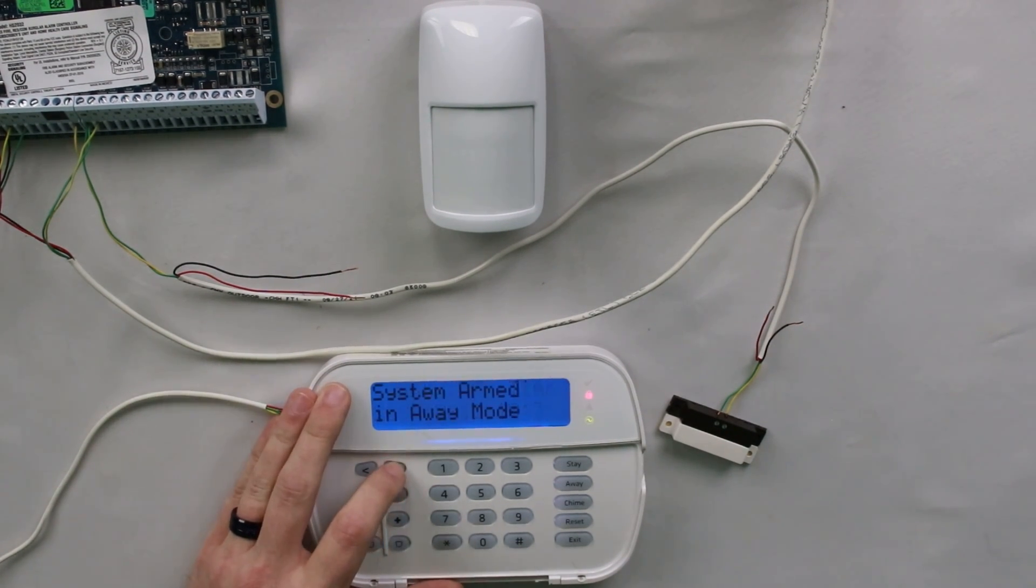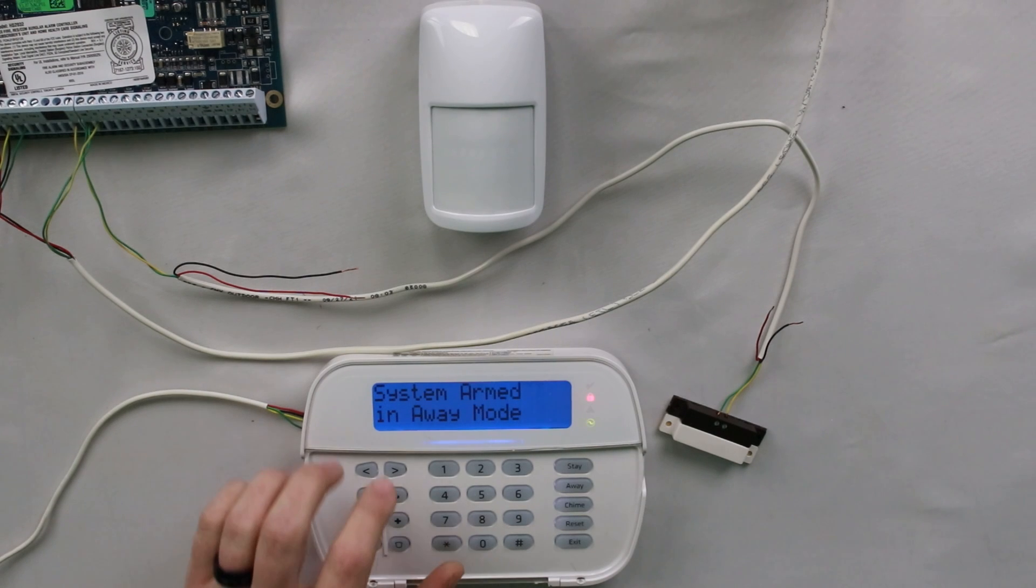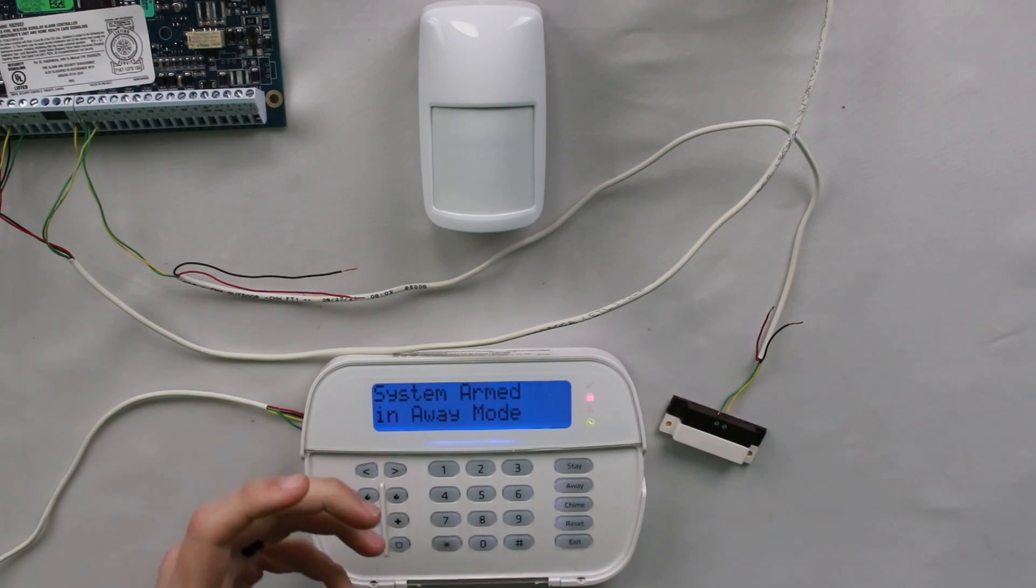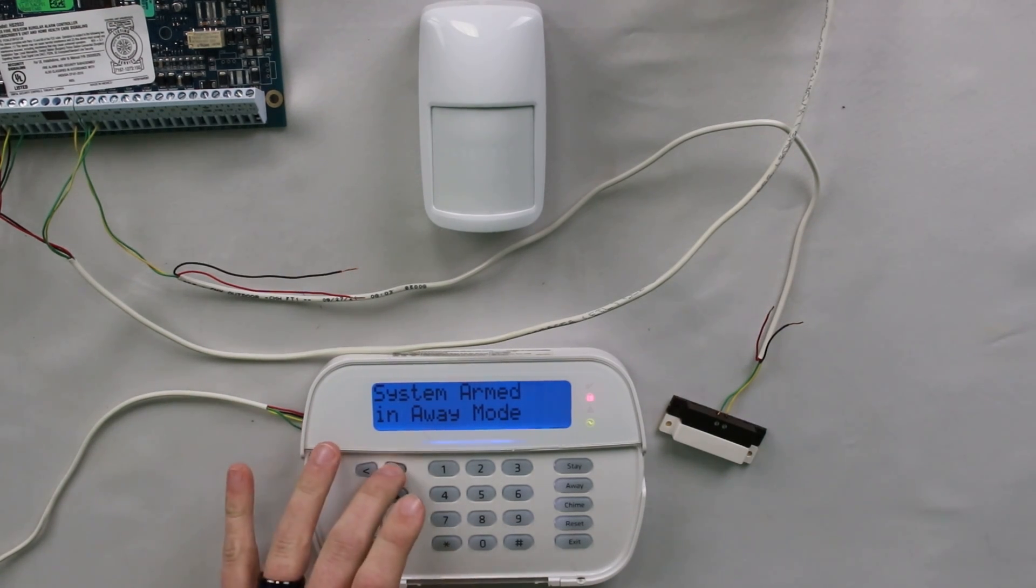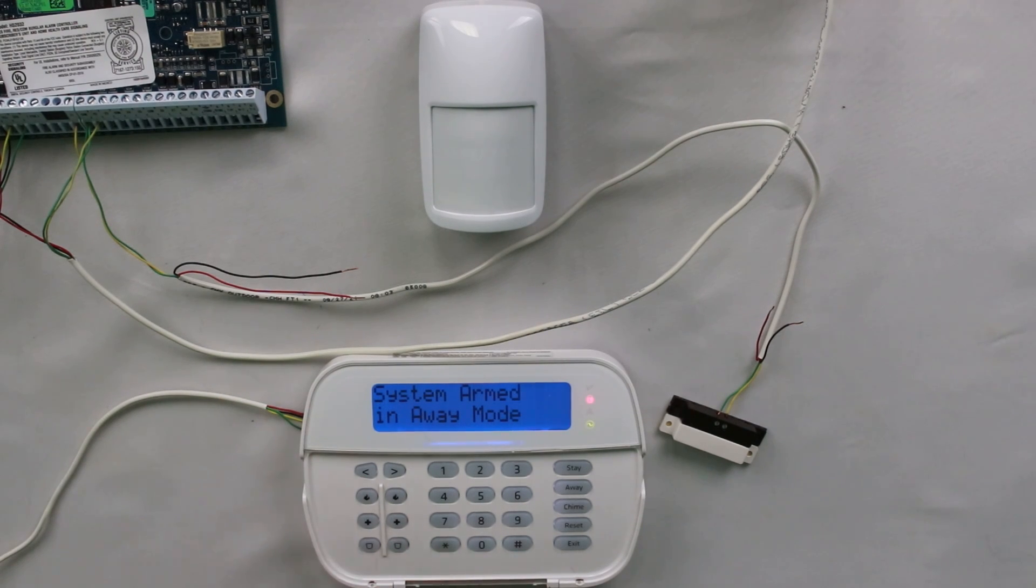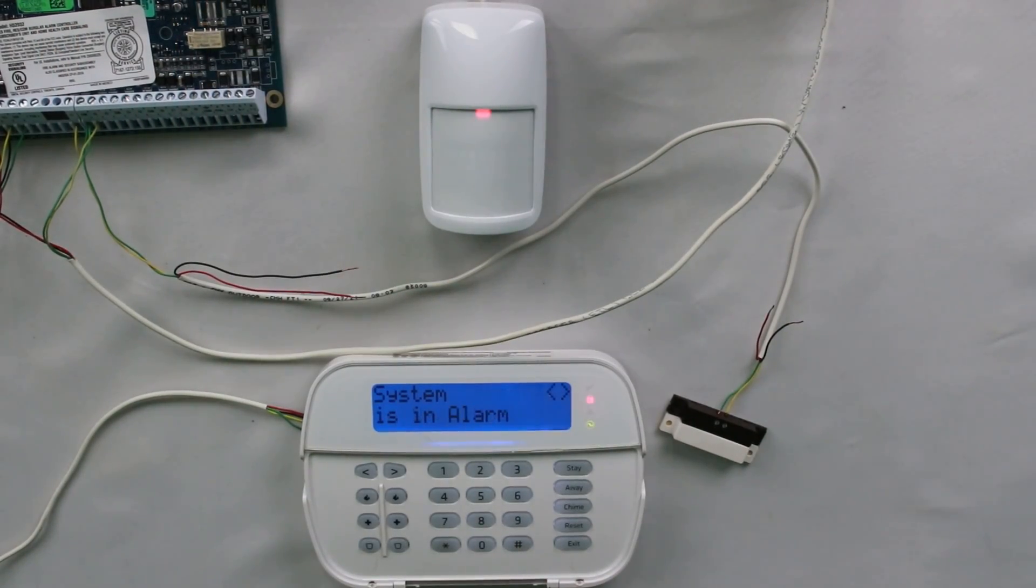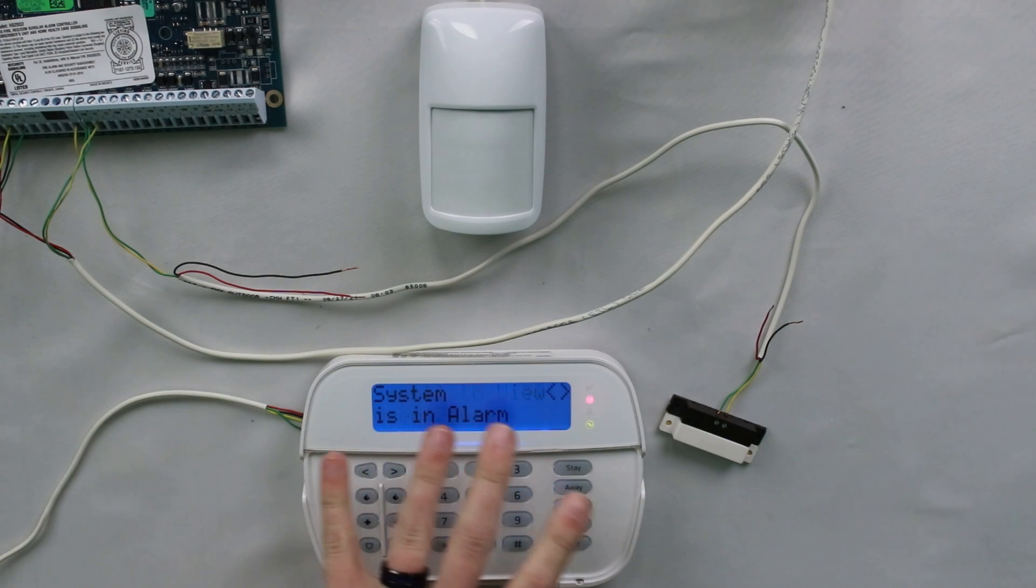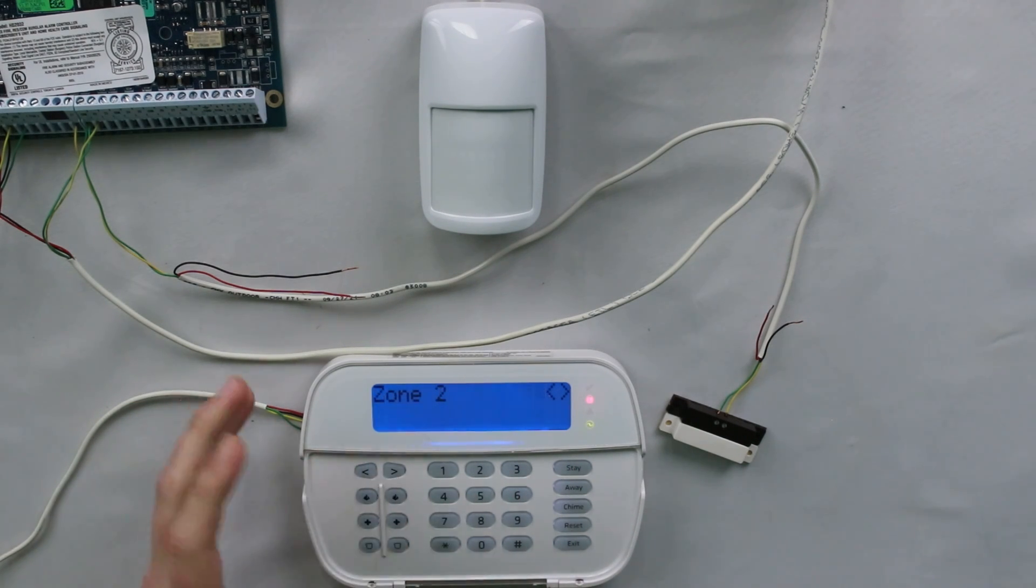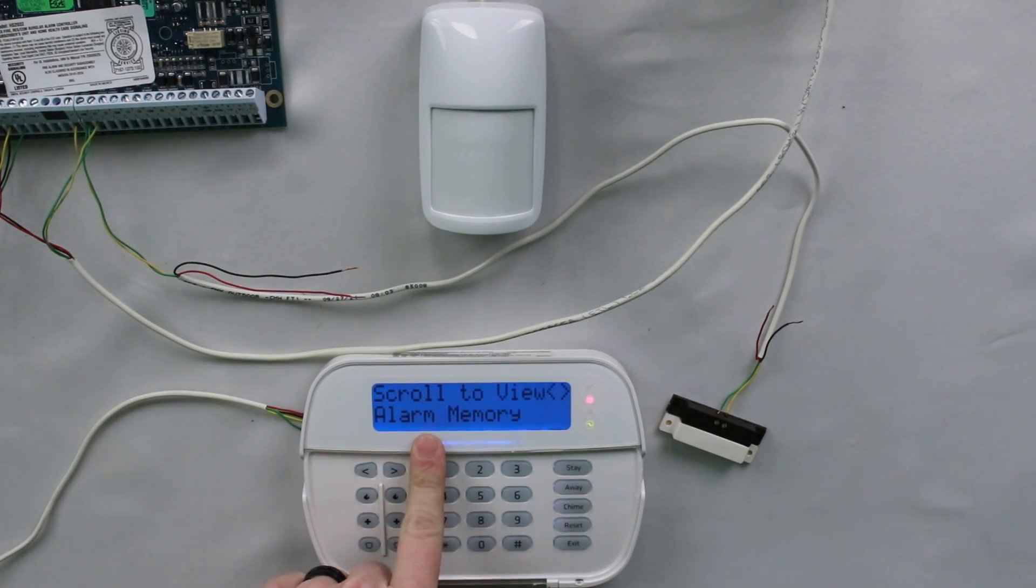So we've armed and we are in away mode, as you can see there, system armed in away mode. Now, what that means is that motion is active. So if I trigger it again, it is going to set off the alarm system. And as you'll see, as I scroll, there are no other options. And that's because you shouldn't be in the house right now is basically what it's telling you. So if I trigger that motion, system will go into alarm. Right now I have the keypad alarm beeps turned off, so you can't hear it. But essentially, you can see it there. System is in alarm and it's scrolling through whatever zone was triggered, zone two, which is the motion.